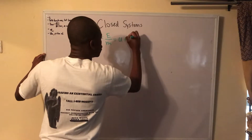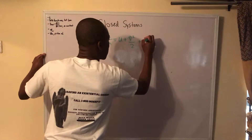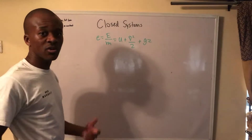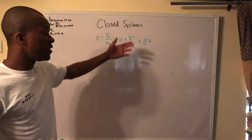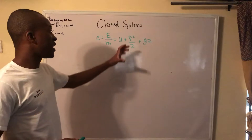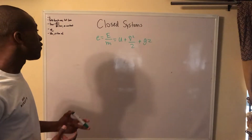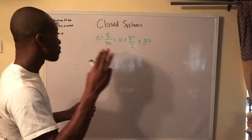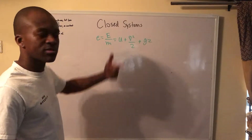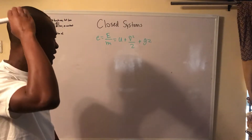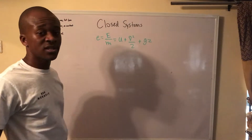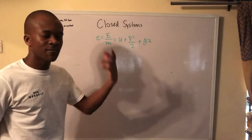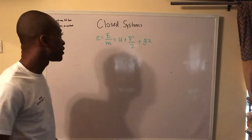The general energy equation is: e = u + v²/2 + gz. Here, u is the internal energy we've learned about previously, v (written with a vector sign) is our velocity — I use the vector notation because we have a lot of v's in thermodynamics: volume, specific volume, and velocity. g is our acceleration due to gravity, and z is your height or vertical displacement.